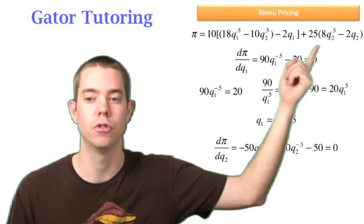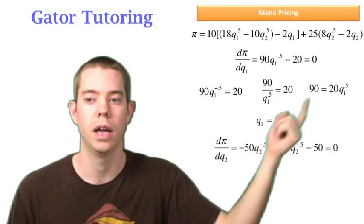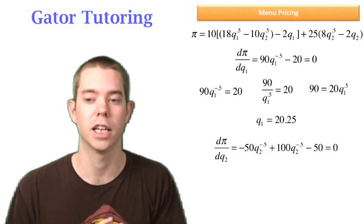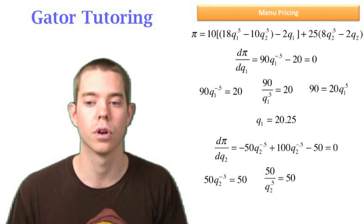And the negative 2 at the end there times 25, that gives me 50. So again, I set that equal to 0 and now I can combine like terms. And I solve for Q2 in this case to be equal to 1.